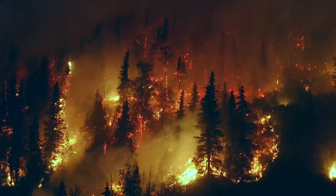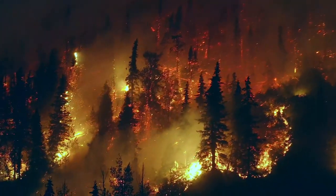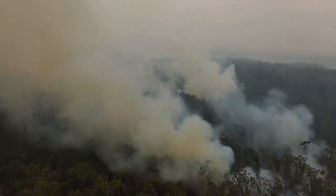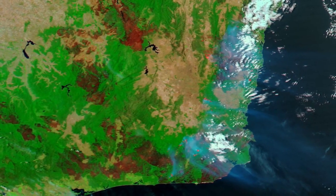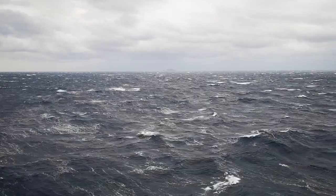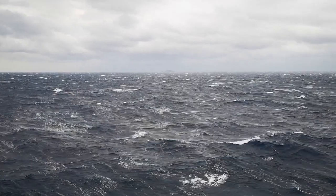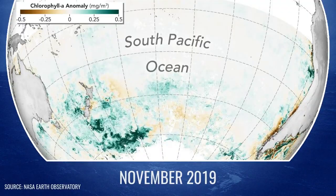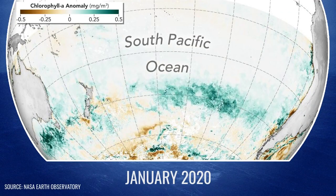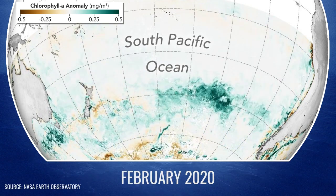Between September 2019 and March 2020, wildfires killed billions of animals and decimated more than 200,000 square kilometers of Australian forest — an area larger than the size of Nebraska. Some thousands of kilometers away in the Southern Ocean, massive algae blooms covered a surface larger than the area of Australia itself.